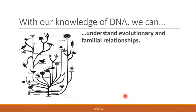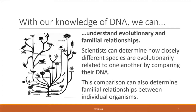With our knowledge of DNA, we can also understand evolutionary and familial relationships. Just like you can look at the DNA of a child and determine who that child's parent is, you can also determine evolutionary relationships by comparing different species and determining what species are most closely related or what could be the evolutionary ancestor of a given species. This works on the species level as well as with individual organisms.